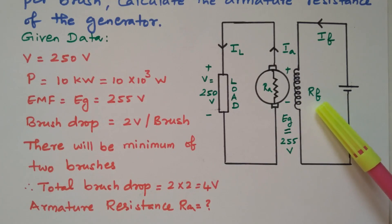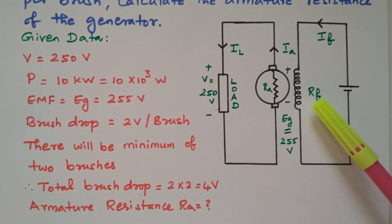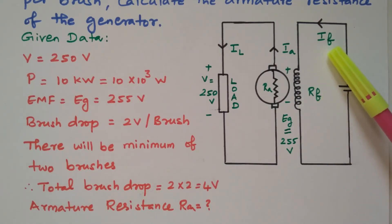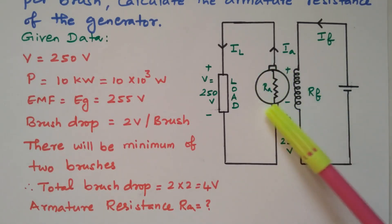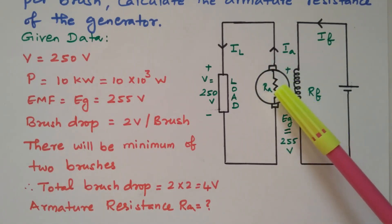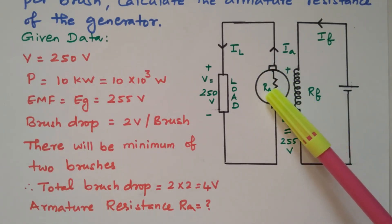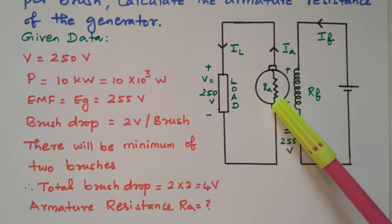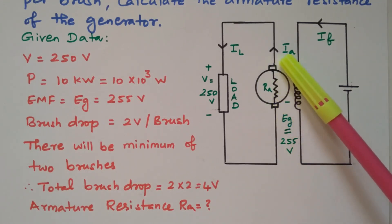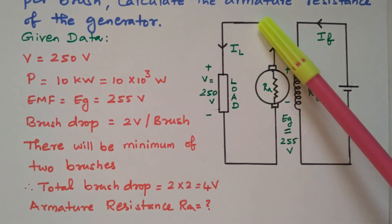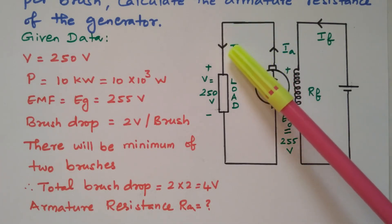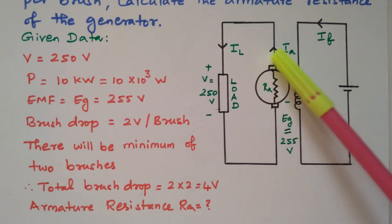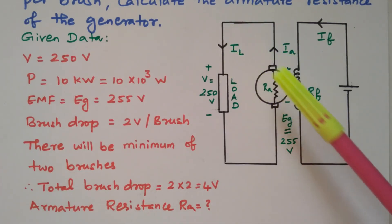This is RF, the field coil. The current flowing through it is IF, the field current. In the rotating armature we have RA, the armature resistance. The current flowing from the armature is Ia, and while going into the load it is IL. So Ia is equal to IL — both are equal.